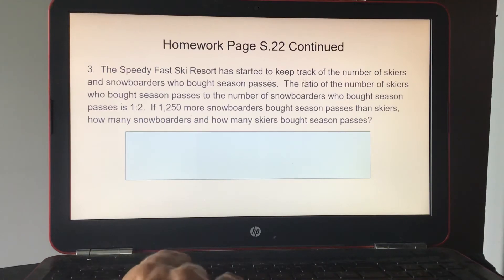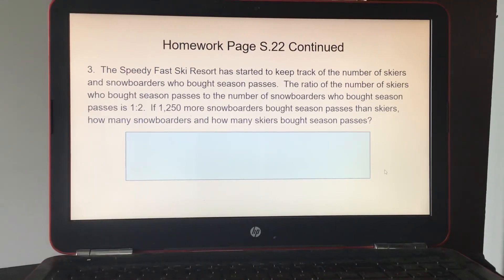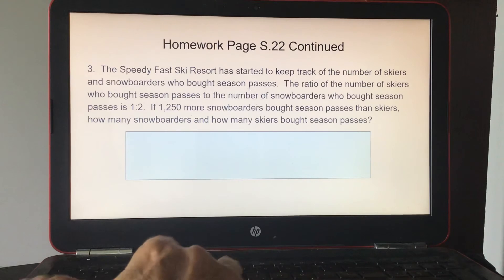Number three. The Speedy Fast Ski Resort has started to keep track of the number of skiers and snowboarders who bought season passes. The ratio of the number of skiers who bought season passes to the number of snowboarders who bought season passes is 1 to 2. If 1,250 more snowboarders bought season passes than skiers, how many skiers bought season passes? This one you could make your boxes. So one for the ratio of the number of skiers who bought season passes to snowboarders. So skiers would be 1 and snowboarders would be 2 boxes, okay?